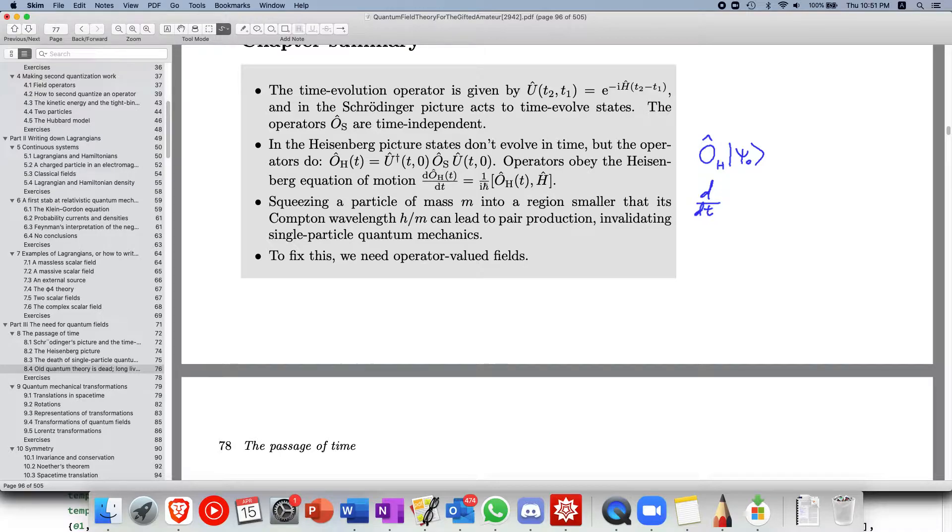So it's given by Heisenberg's equation of motion which is 1 over i h bar and it's given by the commutator of this operator with the Hamiltonian. So it's important to note that all the pictures of quantum mechanics, they are actually all equivalent. There are different ways to write the time evolution.